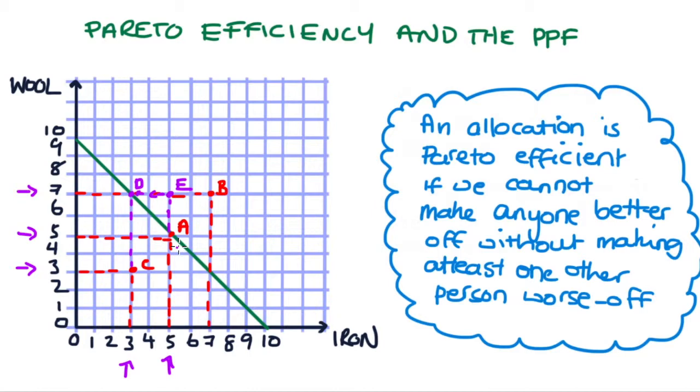Intuitively, if we can increase the production of some good in our economy without having to decrease the production of another good, without having to divert resources, there is a sense in which we are being really inefficient in our allocation of resources, that there are some resources there that aren't being used in that initial allocation.